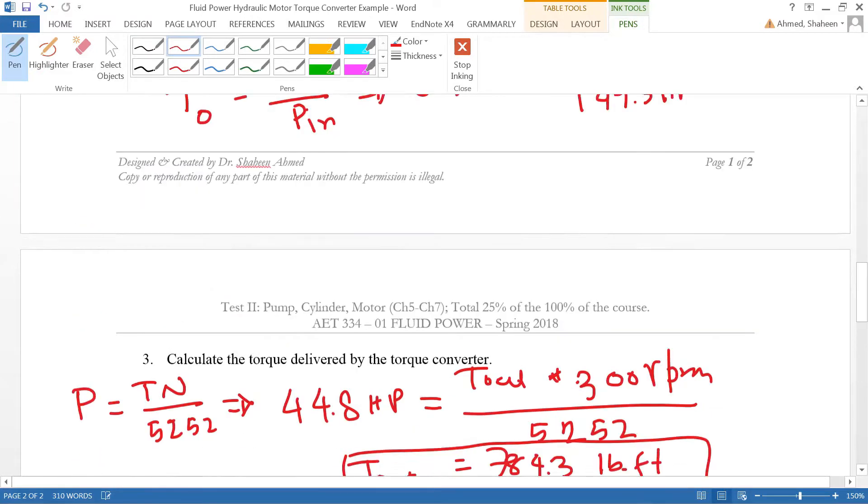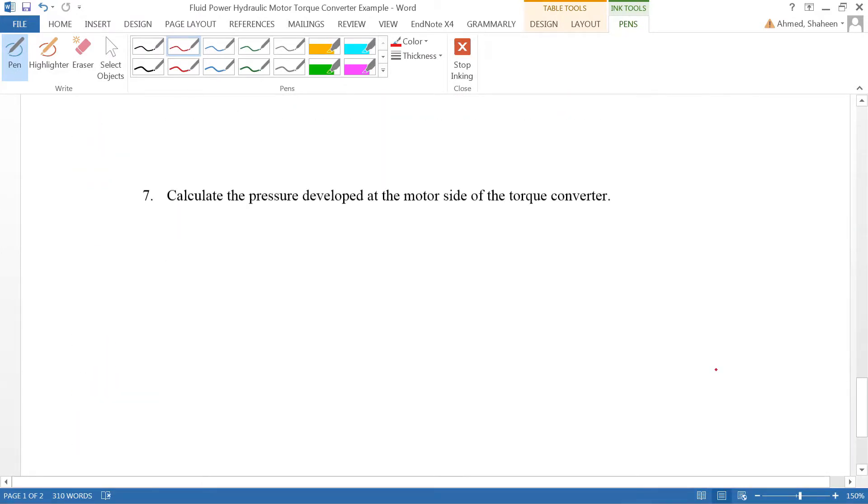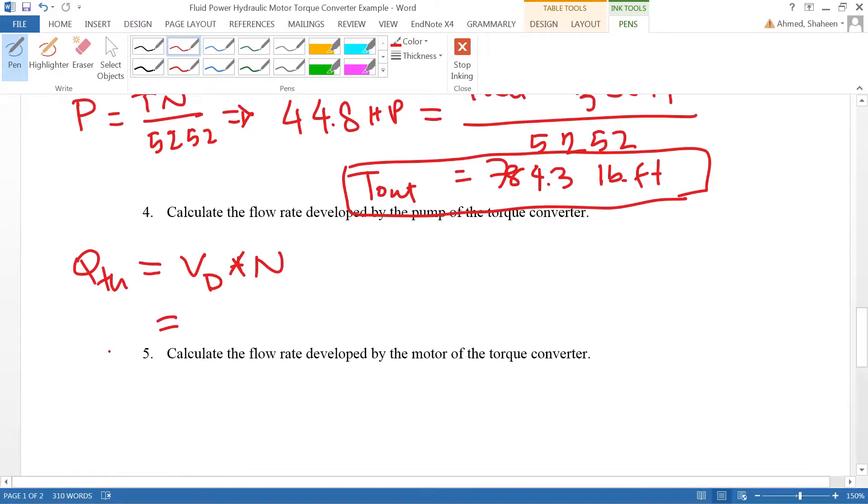If we go back to the problem it is given 2 quart. 2 quart is half gallon so we can directly use gallon to get it in gallon per minute.